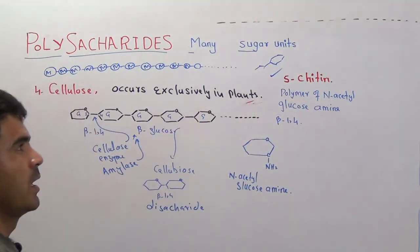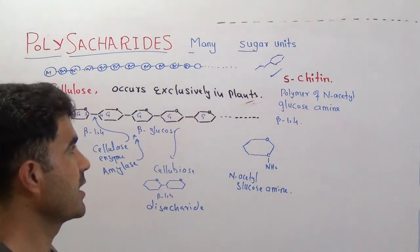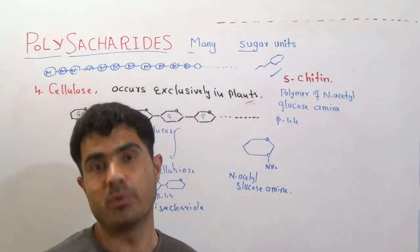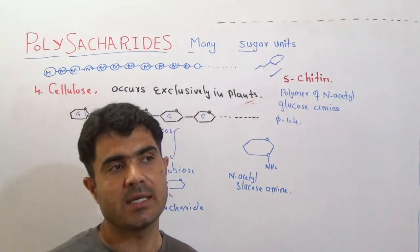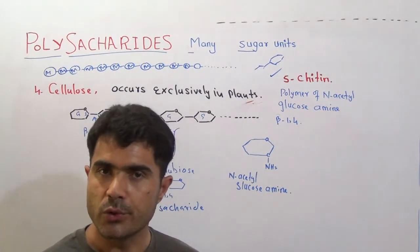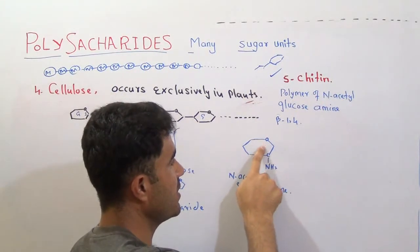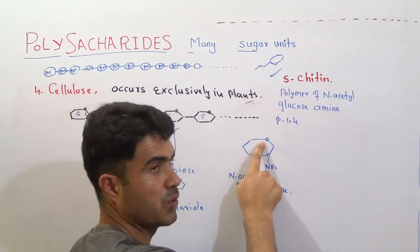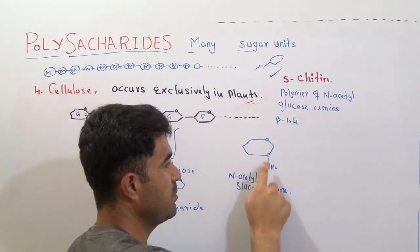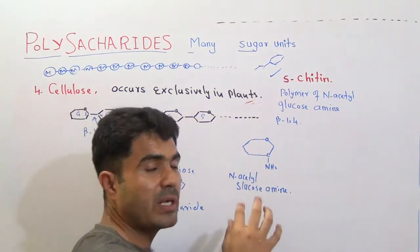The last one is chitin. Chitin is another polysaccharide — of course a homopolysaccharide — but it is a special type because it contains special glucose units. This glucose has carbon number one, two, three, four, five, six, and at carbon number two there is an amino group. Because of the presence of this amino group, we give the name amino sugar to this kind of sugar.